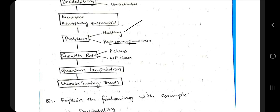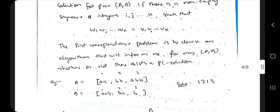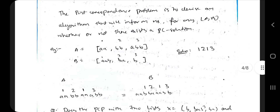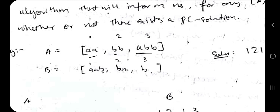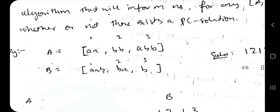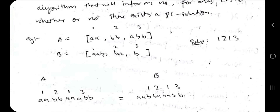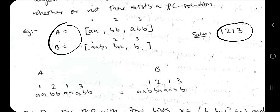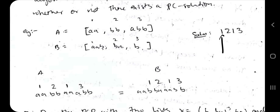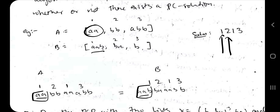Now let's discuss the Post Correspondence Problem (PCP). Suppose you have two lists A and B. The first list has three items: A, AB, B. The second list has three items: AAB, BA, and B. Your task is to find a sequence of indices such that the resulting concatenated string is the same for both lists. For index 1: list A gives 'AA', list B gives 'AAB' — not equal. So we move to the next.